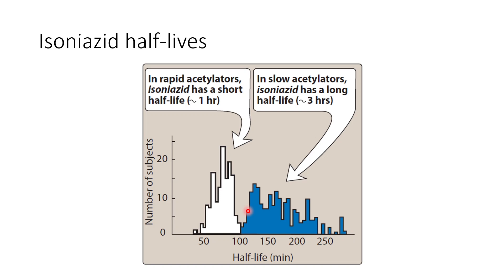Adverse effects of isoniazid include hepatitis, which can lead to death. Hepatitis is more dangerous in those who drink alcohol. Peripheral neuropathy can be avoided by administering pyridoxine (vitamin B6). Central nervous system adverse effects include seizures and convulsions. Hypersensitivity reactions can present as fever.